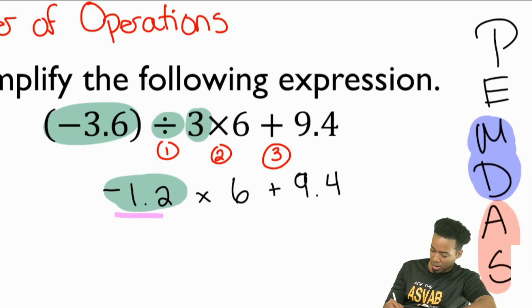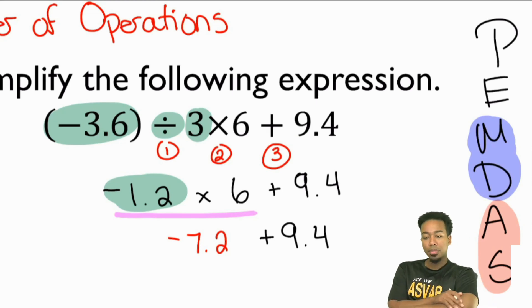And then up next, we're going to take care of this right here. And that's going to be negative 7.2, and we're still going to add that same 9.4. And this is going to be the same thing as saying 9.4 minus 7.2. 9.4 minus 7.2 is going to end up being 2.2. And we're done.